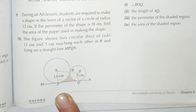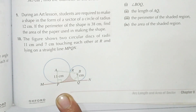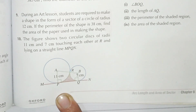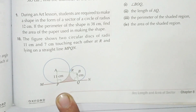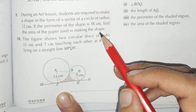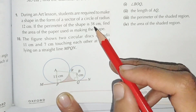make a shape in the form of a sector of a circle of radius 12 centimeters. If the perimeter of the shape is 38 centimeters, find the area of the paper used in making the shape.